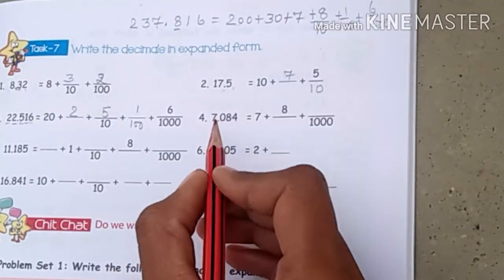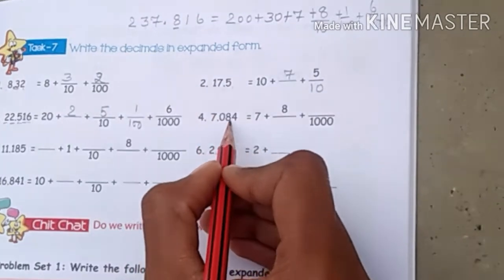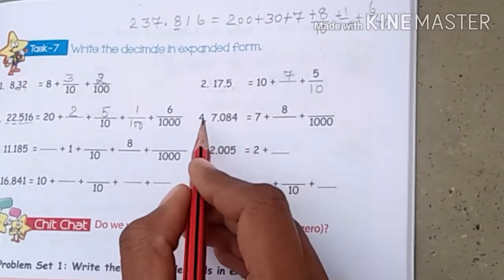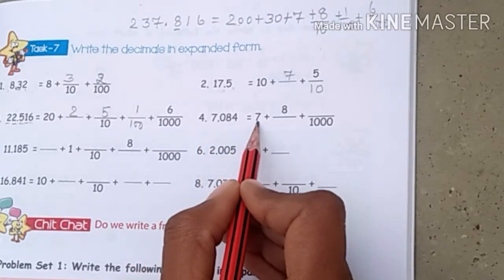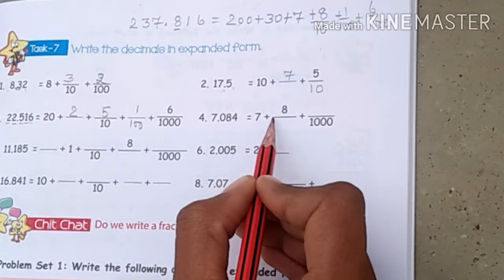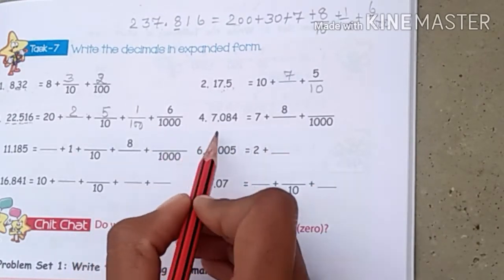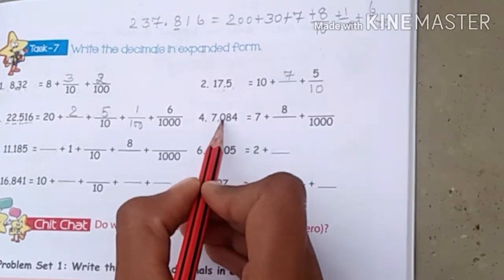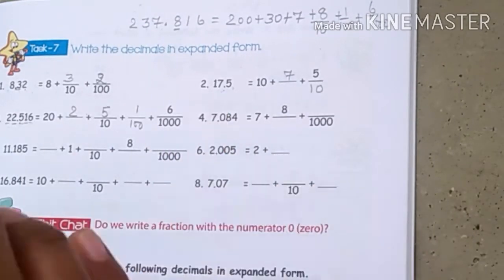Question number 4: 7.084. The whole number part is just 7. Now for the decimal digits — here we have 0 as the first decimal digit.